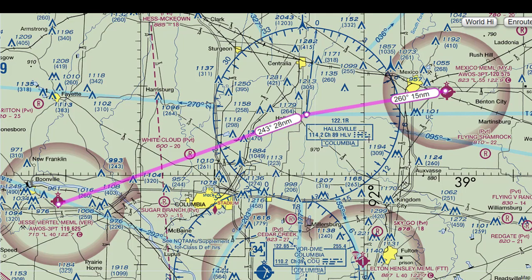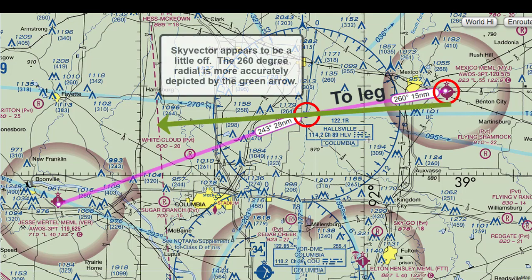In this video, we are going to use a VOR to navigate from one airport to another. We will take off from the Mexico Memorial Airport and fly to the Hallsville VOR on the 260 degree radial.